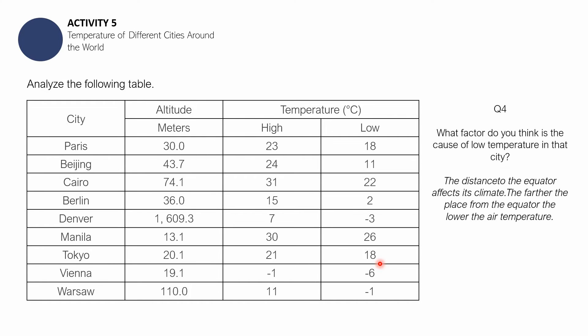The factor that affects the low temperature in Vienna is its distance to the equator. It has a great distance from the equator. The farther the place from the equator, the lower the air temperature.